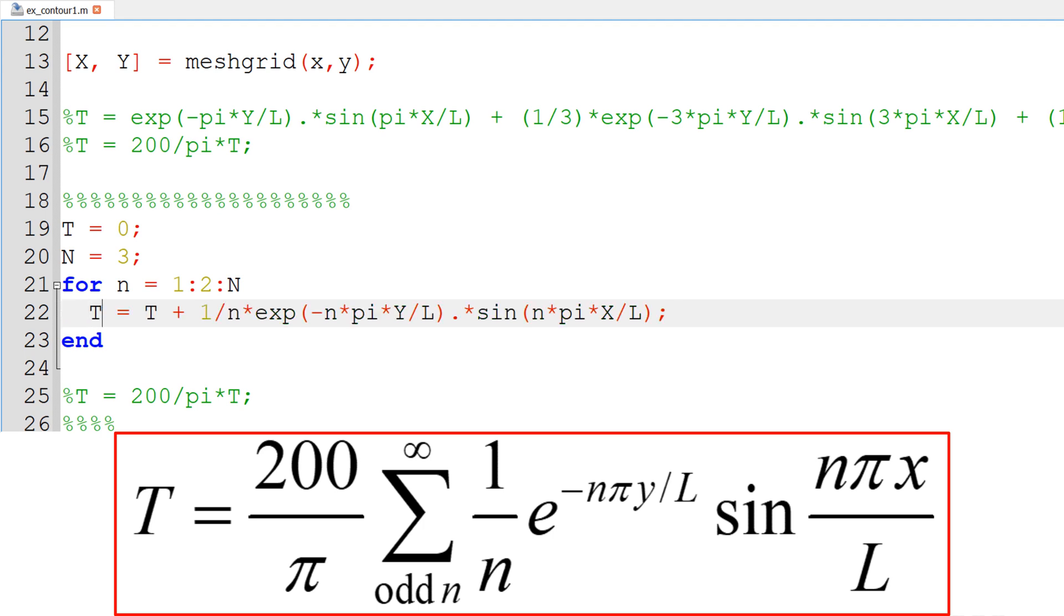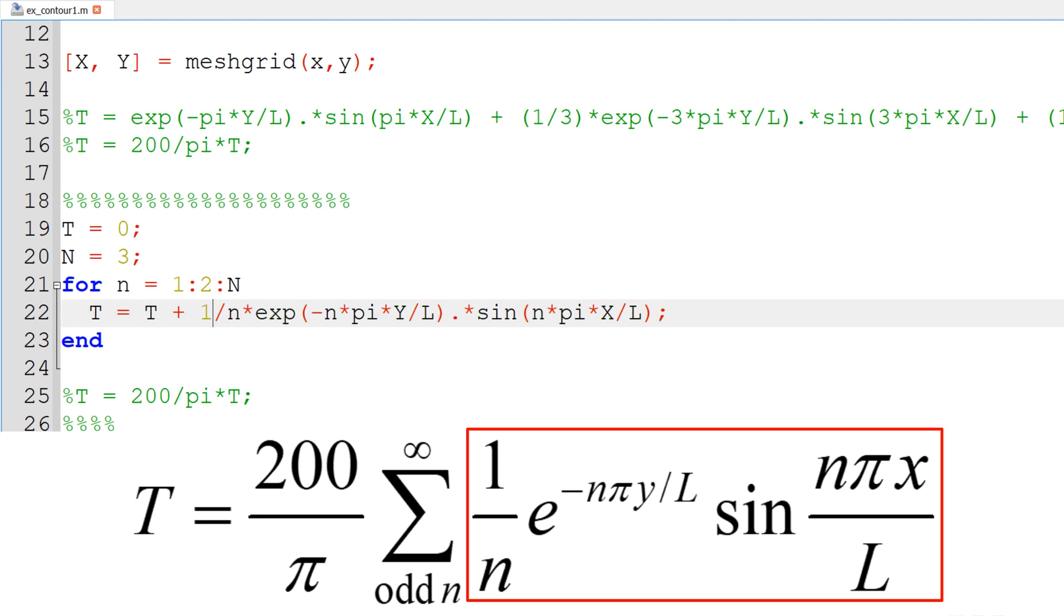Then in the meantime, I can add one over n, multiply by exponential minus n pi y over L, multiply by sine n pi x over L. So make sure that you add a period in between.